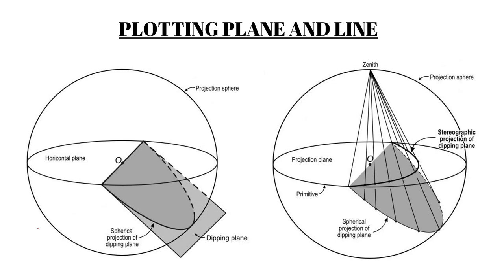We use the lower hemisphere of the sphere for plotting these features. Only the part of the plane that is inside the lower hemisphere will be plotted. Even if the plane is a semicircular plane, it is still a plane and will have the same attitude as the circular and square plane we saw earlier — so no difference for our purpose.